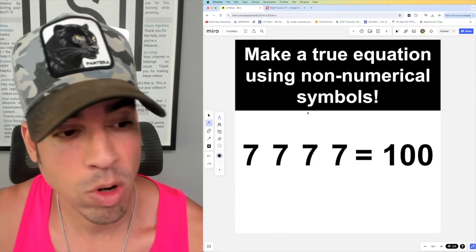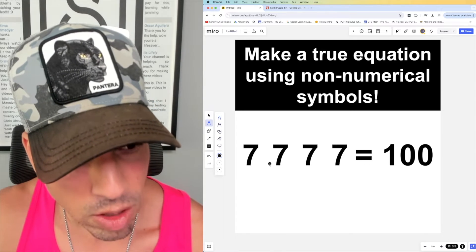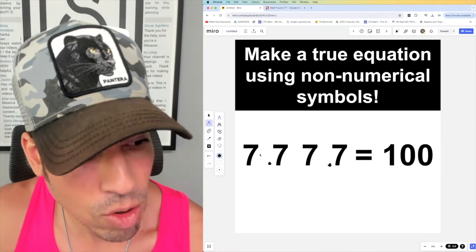There might be more, but it says any non-numerical symbols. Well, guess what? I can add some decimals in here, right? So I can make that 0.7, I can make that 0.7. Why is that beneficial? Because now I can...